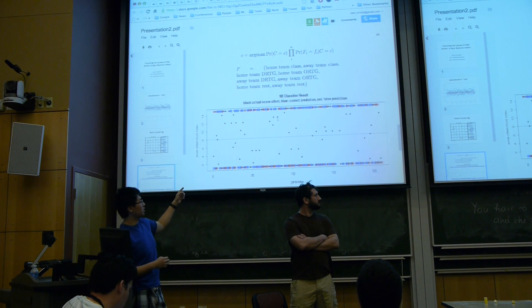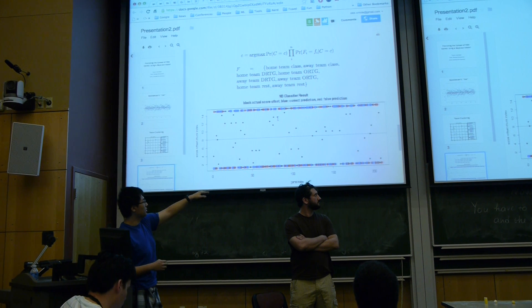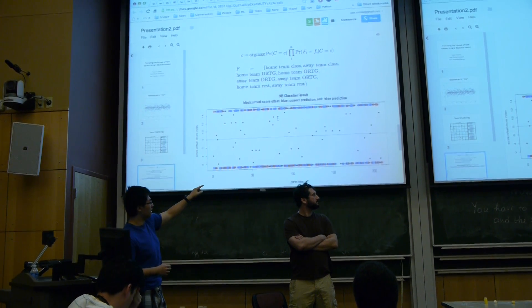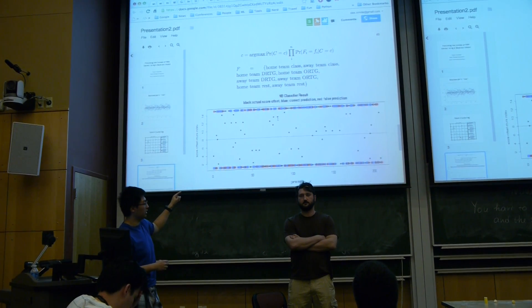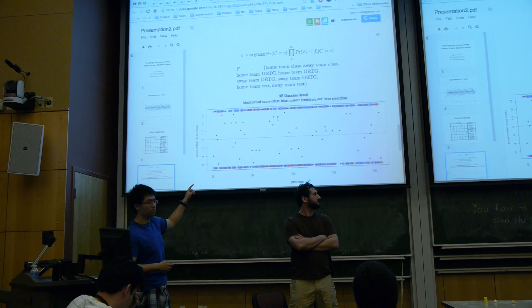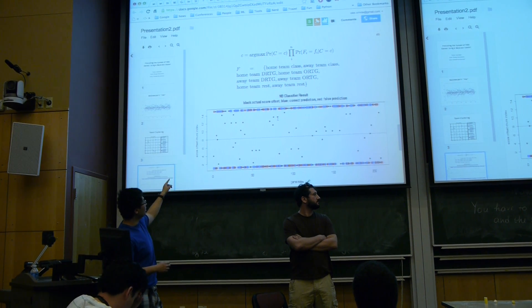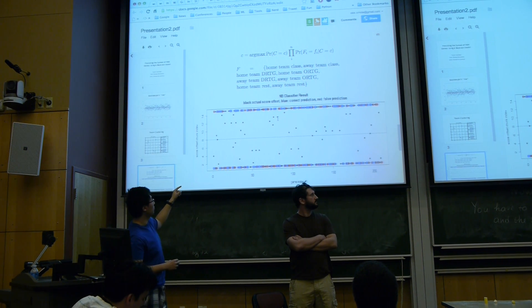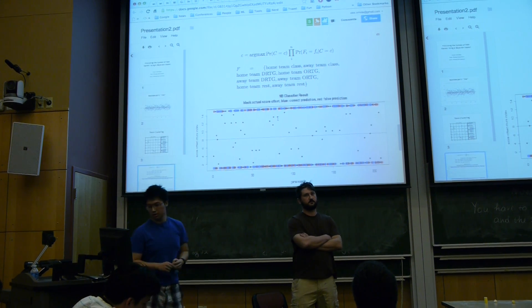So the plot is actually our result. The line indicates the handicapper's line, and then the black dots are the actual game result, and then the red dots are our correct predictions, and the blue dots are our correct prediction, and the red dots are false predictions, and we yield a 58% accuracy.